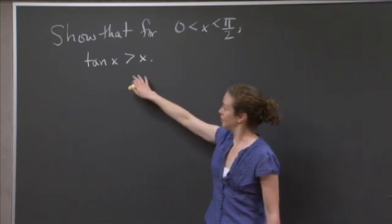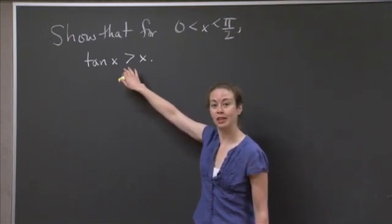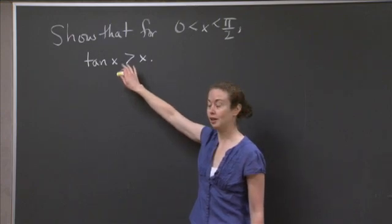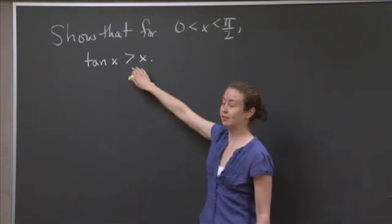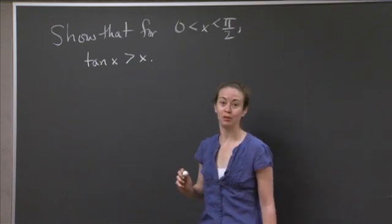I want to point out that this was actually something that Joel used when he was graphing tan x and arctan x on the same xy-plane. He used this fact in order to get the right looking graph.